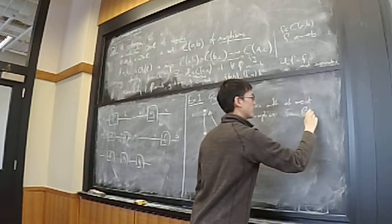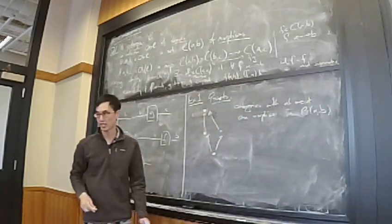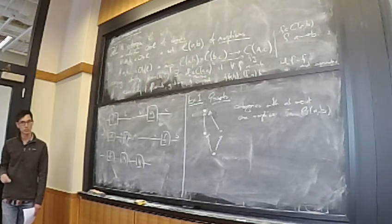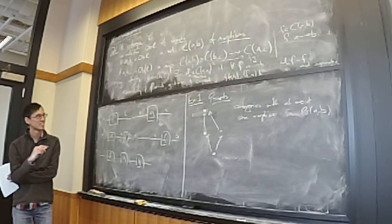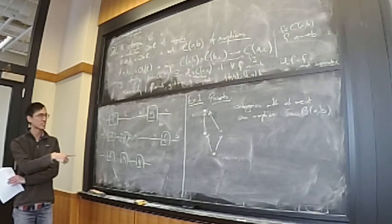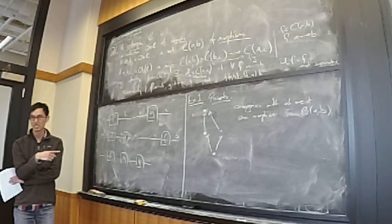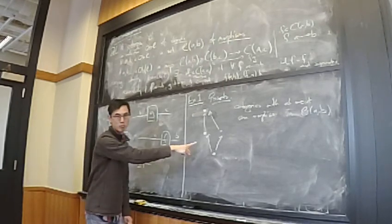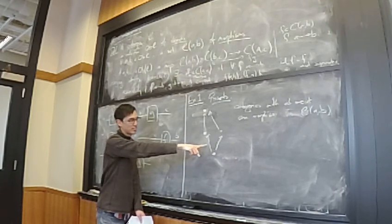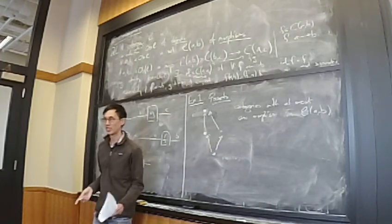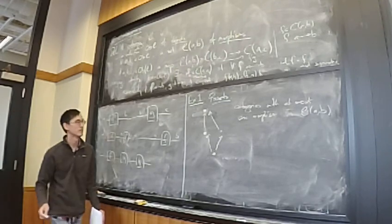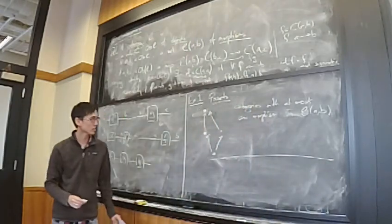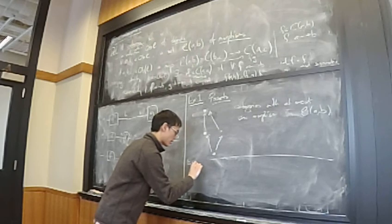Posets are categories with at most one morphism between any two objects. From the Hasse diagram, we take the transitive closure of the relation suggested by these arrows, and that forms a pre-order — which is a category in which between any two objects there is at most one morphism. Example two: monoids. These are categories with exactly one object.